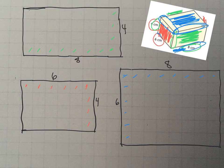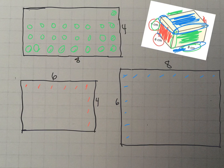When counting for the surface area, you literally just count the squares on each face. Counting the green face, there are 32 squares.